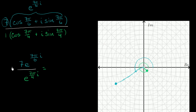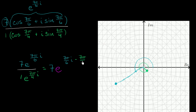So this is going to be equal to — seven divided by one is just seven — seven times e to the seven pi over six i, minus seven pi over four i.